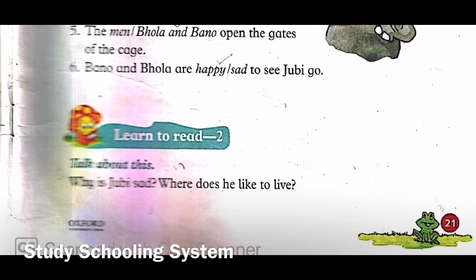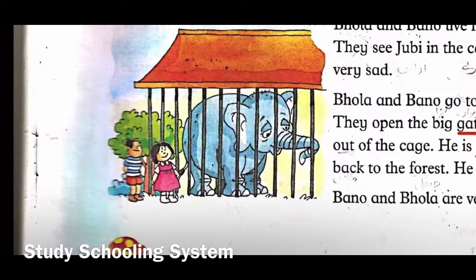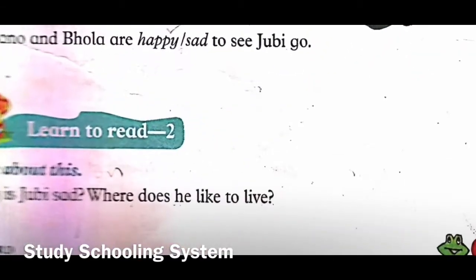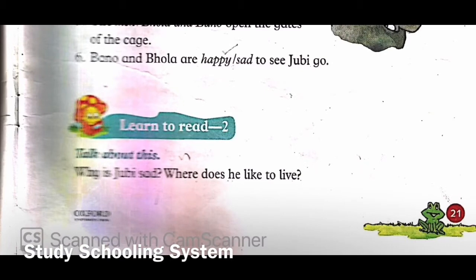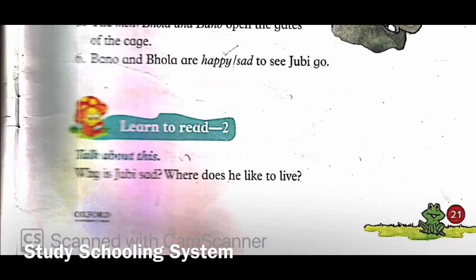Now let's go to 'Learn to Read Two' - talk about this: why is Jubi sad and where does he like to live? Students, why is Jubi sad? Of course, when your freedom is taken from you and you are locked in a cage - look at him, he's locked in a cage. He was so happy in the forest where he is free and can go anywhere he wants.